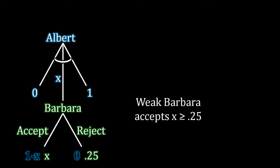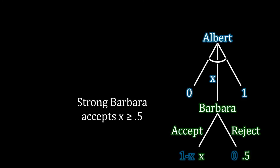If Barbara is the weak type, she's going to accept any offer that's at least as good as 0.25. Any offer greater than that, Barbara will definitely accept, and any offer equal to 0.25, she's indifferent — so we suppose she accepts in that case, just as we've always done. Barbara knows all the information, so she can make the right decision. Similarly, if we're on the other side where Albert is facing a strong type of Barbara, she knows her outside option is worth 0.5, and so she's willing to accept anything greater than or equal to 0.5.